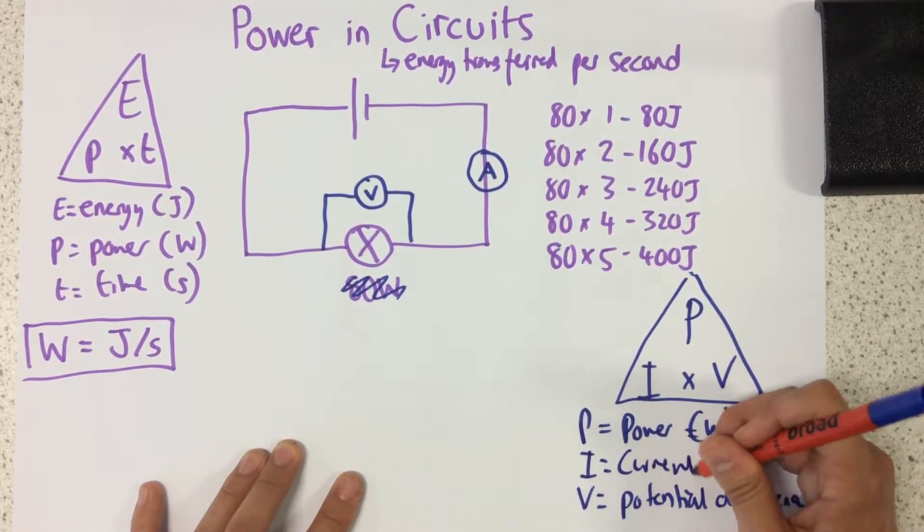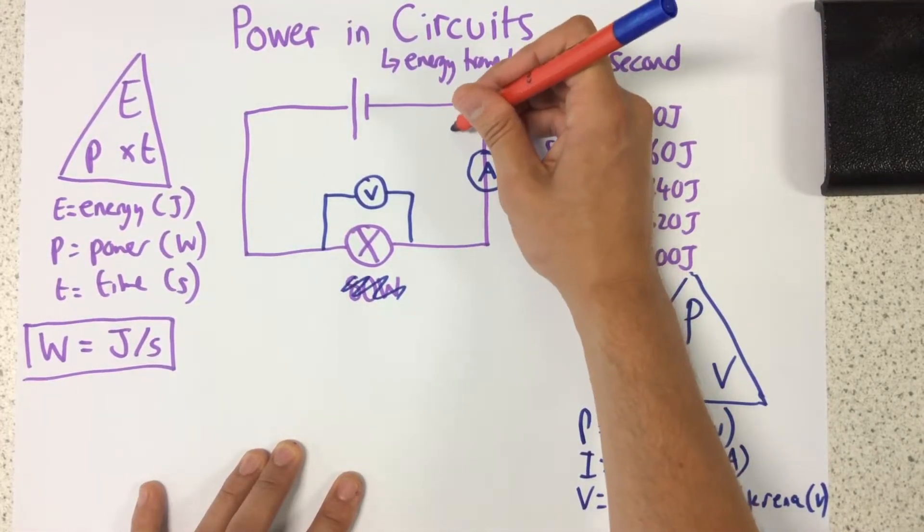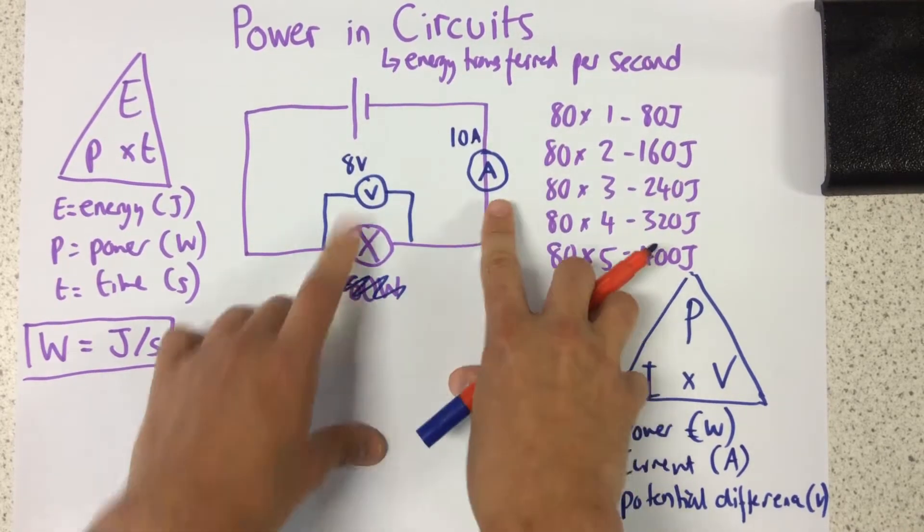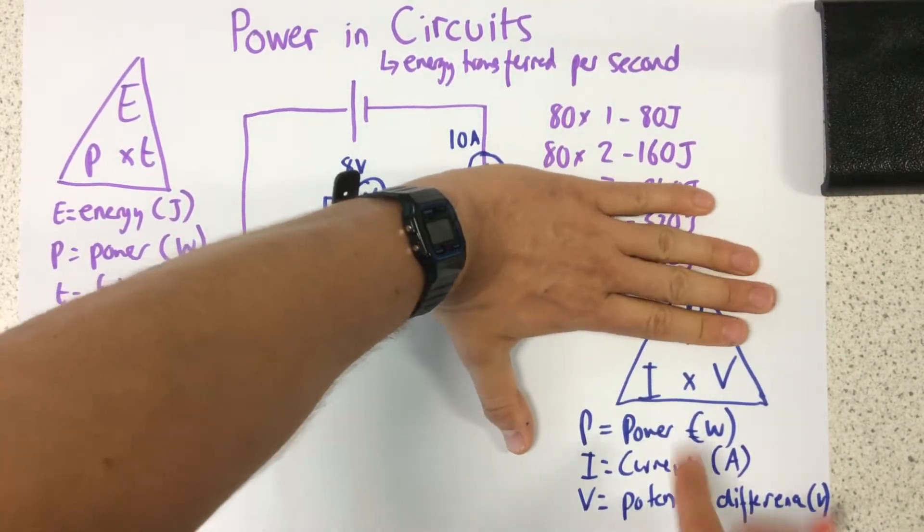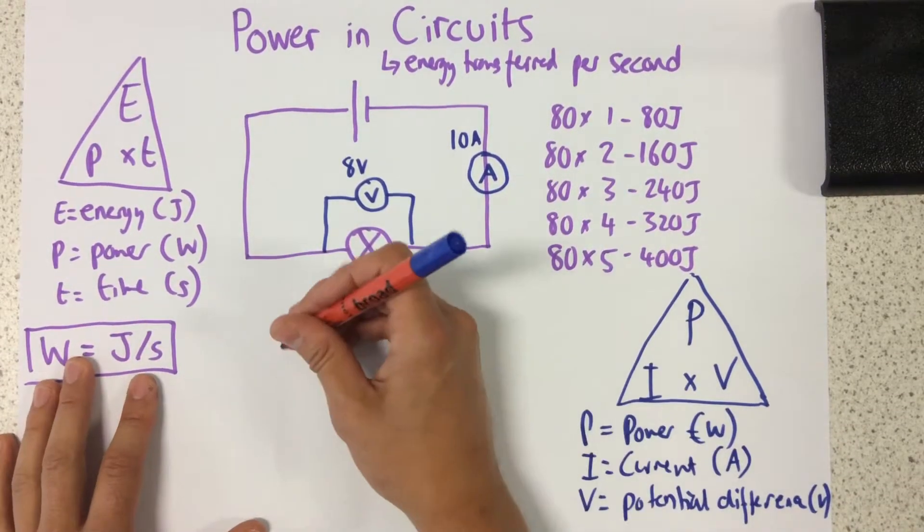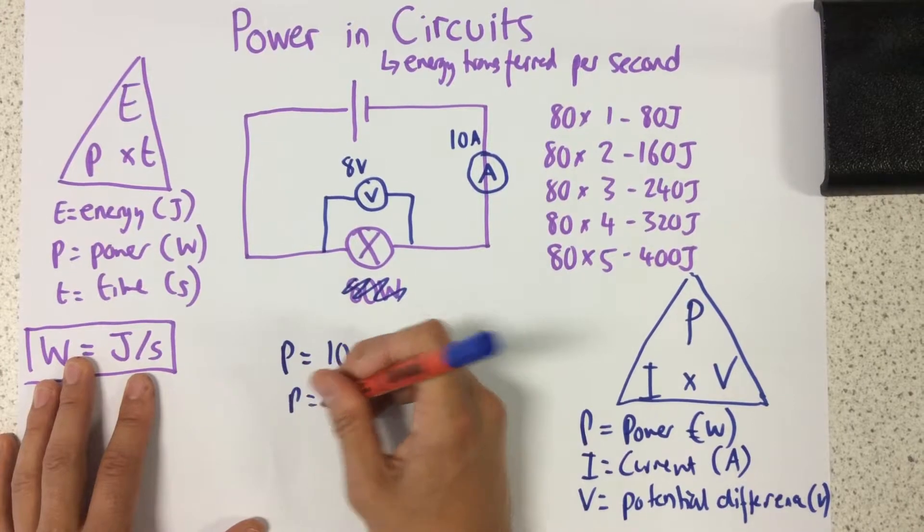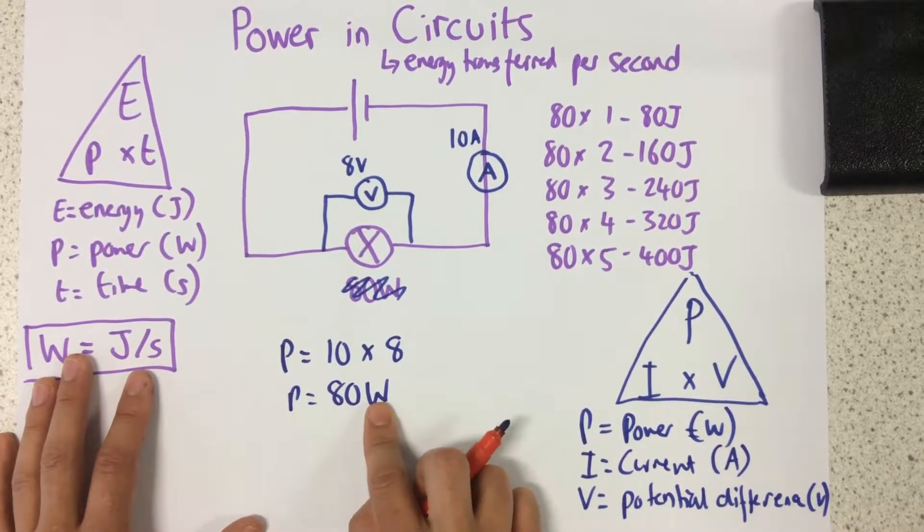So let's have a quick think about that. So let's imagine to begin with, let's imagine to begin with I had 10 amps and 8 volts. So I can see at the moment, to find my power, I do current times voltage. So my power would be 10 times 8, so my power would be 80 watts. I'd be transferring 80 joules every single second.